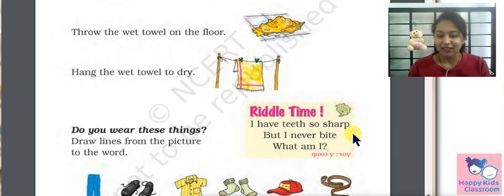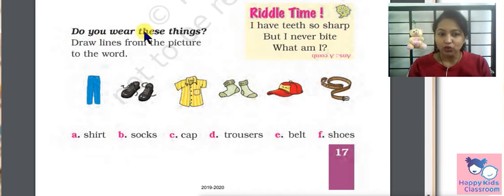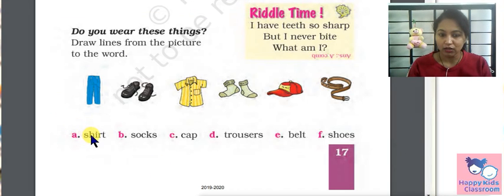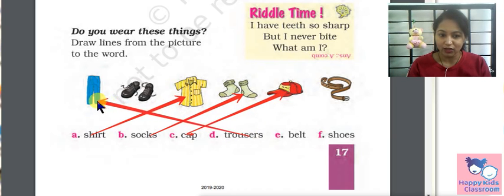Do you wear these things? Draw lines from the picture to the word. So let's begin. Shirt, where is the shirt? Here it is. Socks, match it with the line. Cap, where is the cap? Trousers, belt, and shoes.